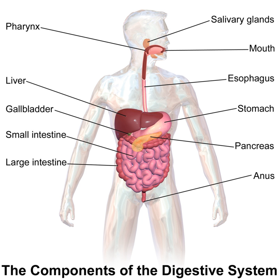Digestive systems take many forms. There is a fundamental distinction between internal and external digestion. External digestion developed earlier in evolutionary history, and most fungi still rely on it. In this process, enzymes are secreted into the environment surrounding the organism, where they break down organic material, and some of the products diffuse back to the organism. Animals have a gastrointestinal tract in which internal digestion occurs, which is more efficient because more of the broken-down products can be captured, and the internal chemical environment can be more efficiently controlled.